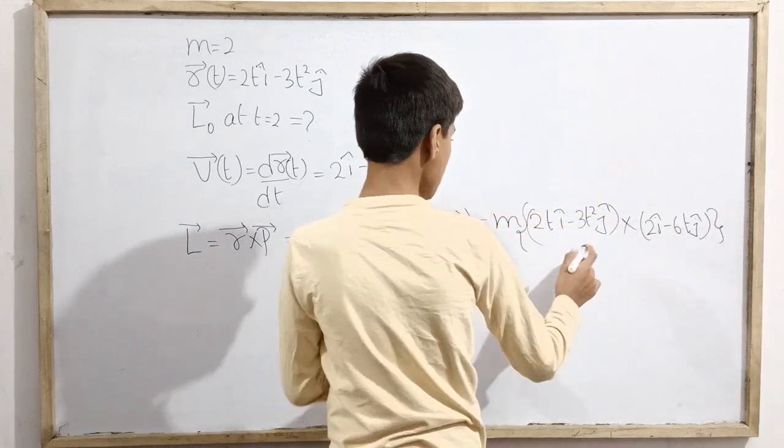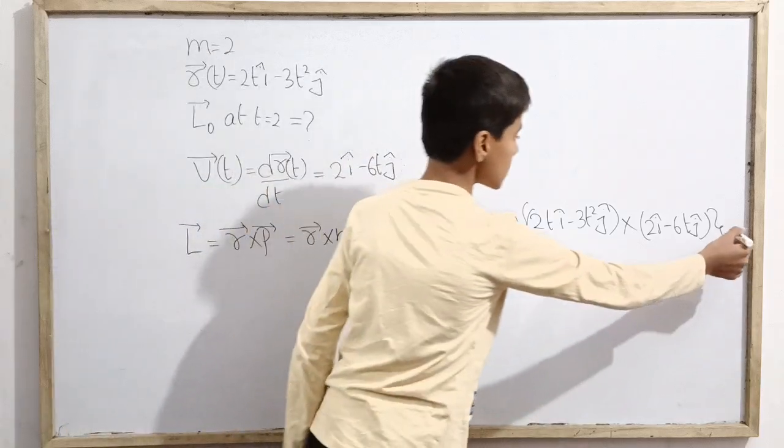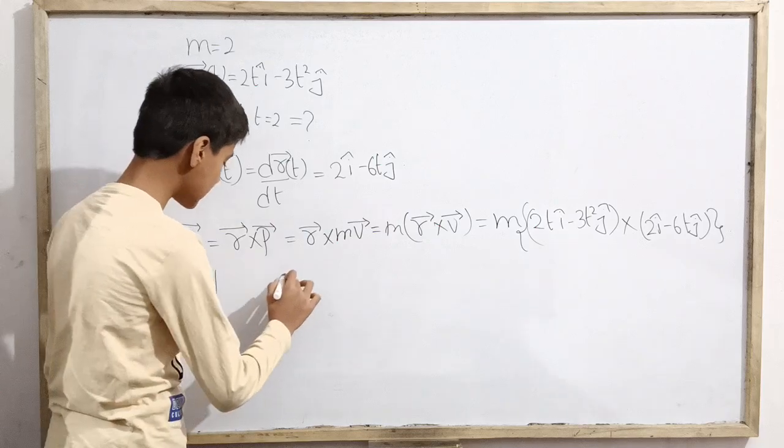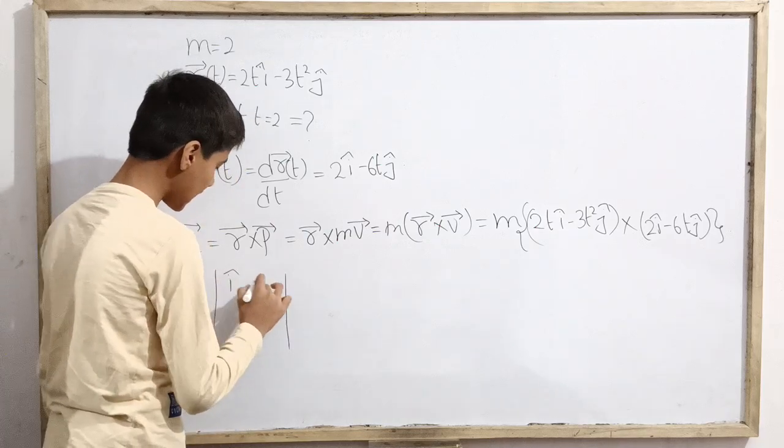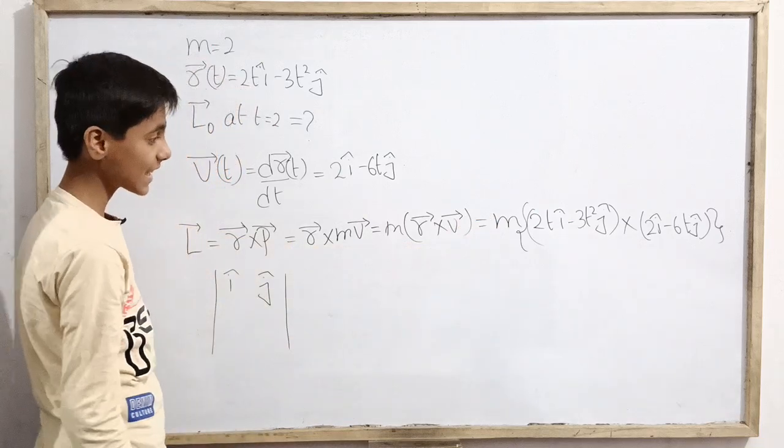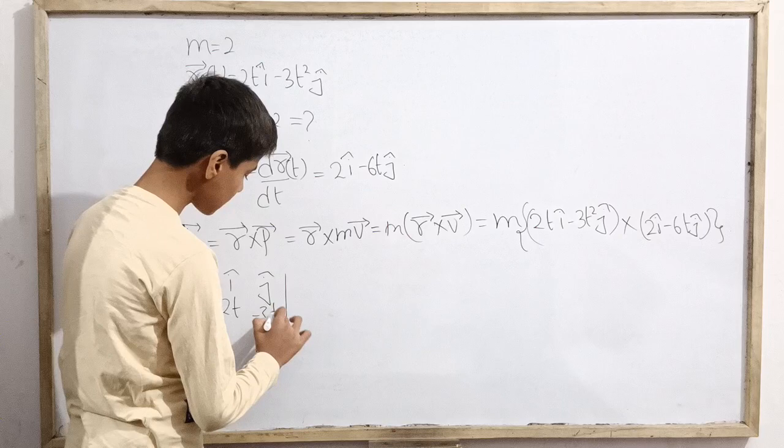Now we need to solve this vector product, which is a cross product. We'll solve it in determinant form. Here's i cap, here's j cap, because they are given in just i cap and j cap. Then 2t, minus 3t square.